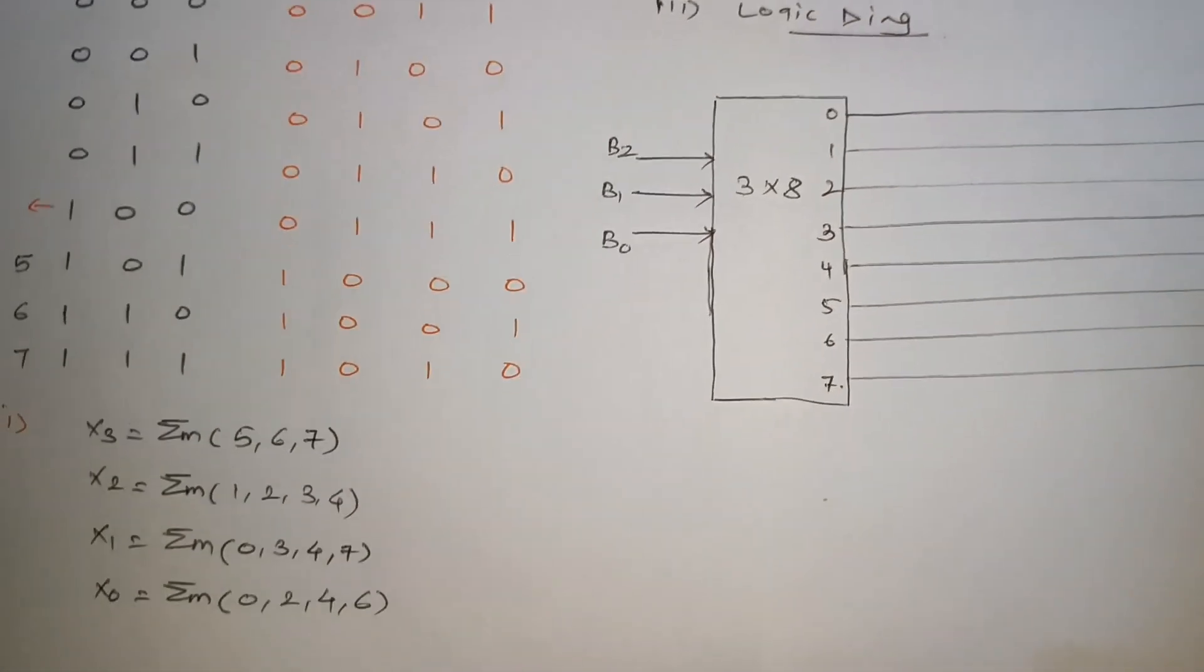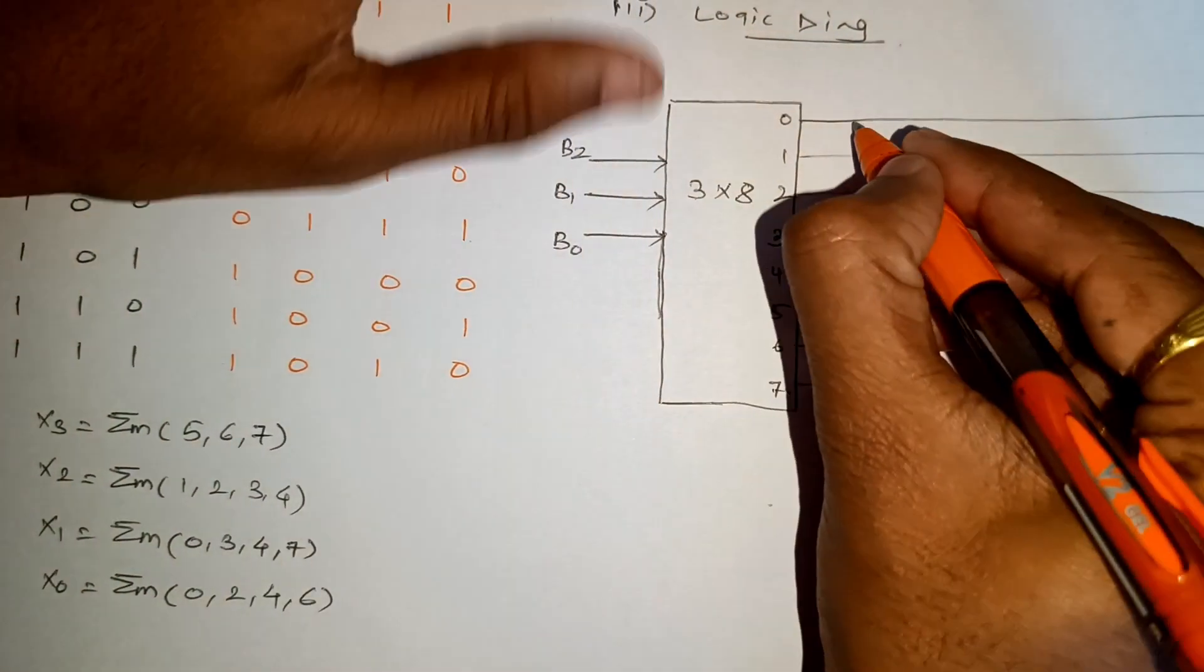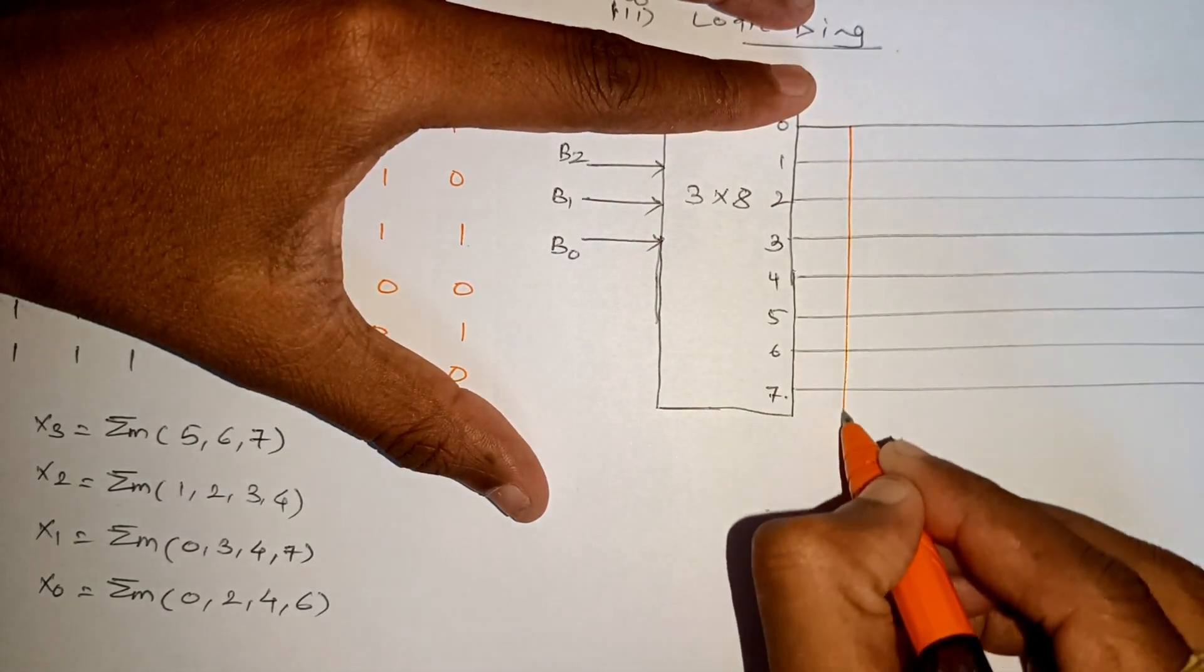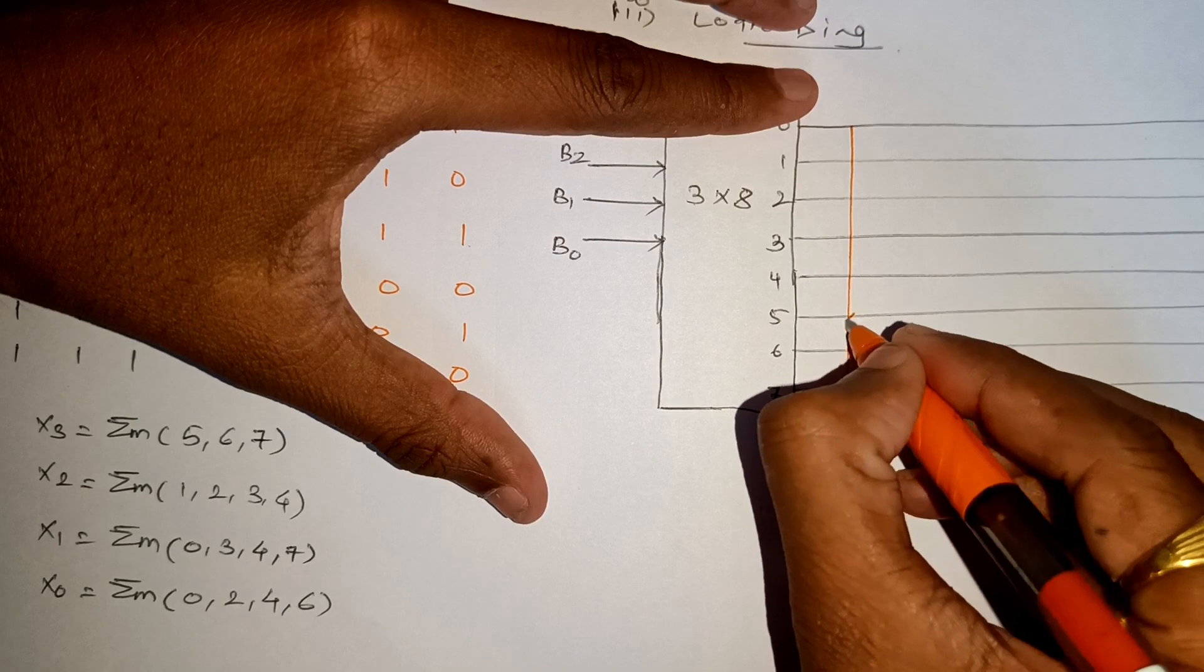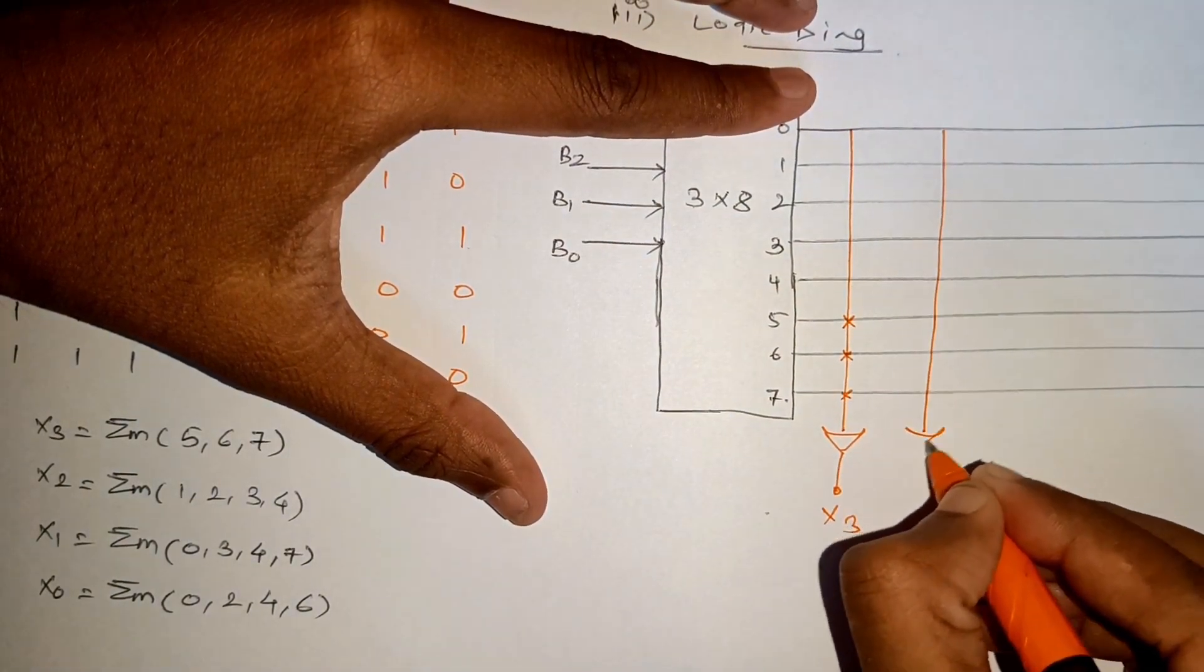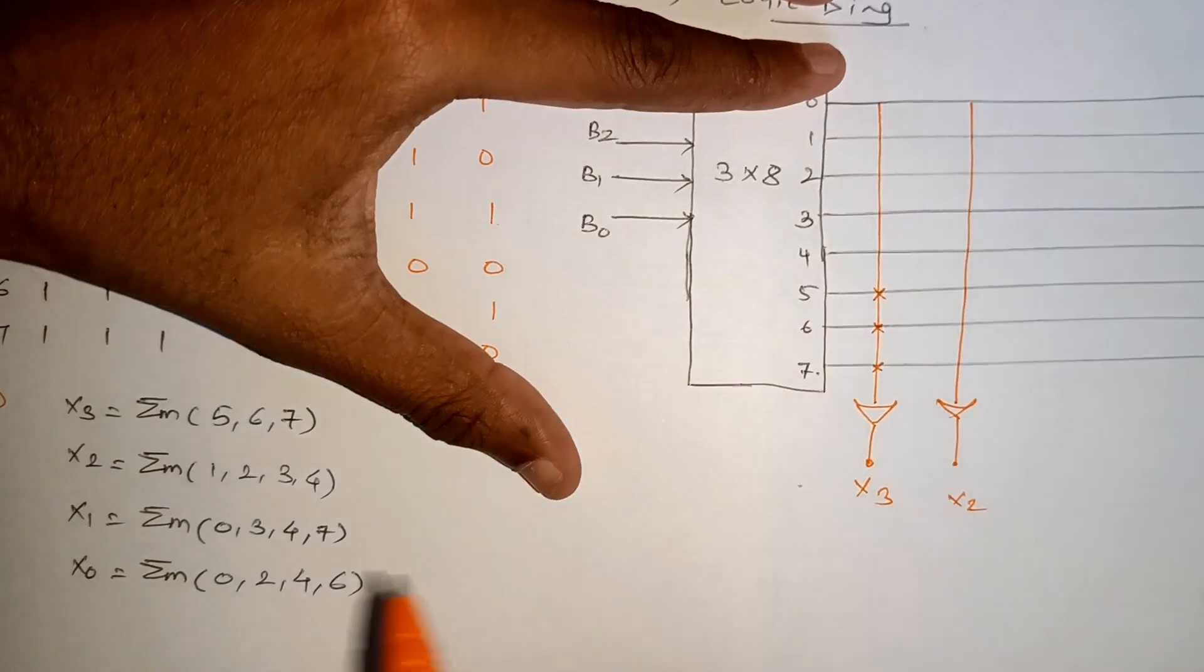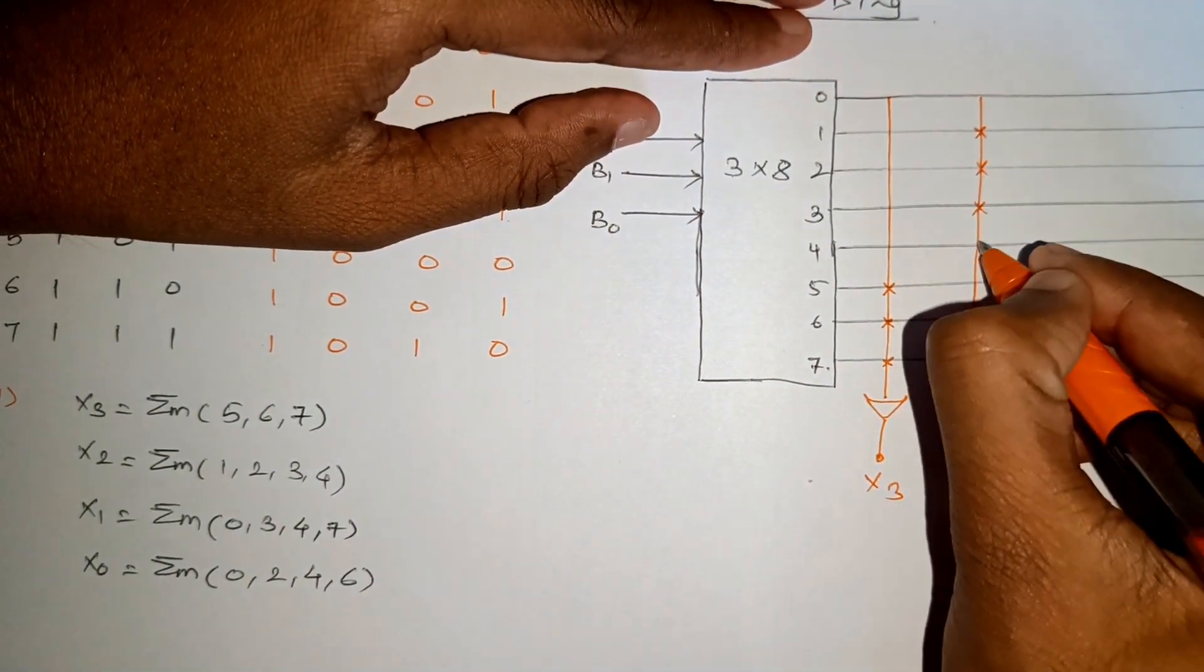Now we have to go to the last step. We have to get X3, which is summation of 5, 6, 7. So we will be connecting one OR gate with 5, 6, 7. In the same fashion for X2, which is 1, 2, 3, 4, we connect 1, 2, 3, 4.